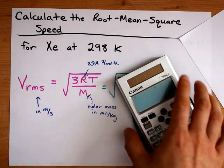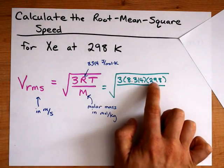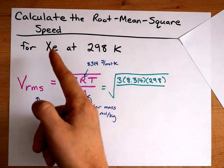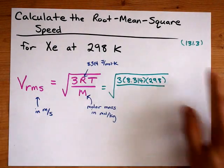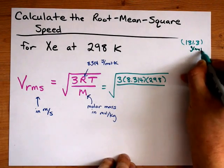Now, I've actually tried this video a couple times, and I've already plugged in the three, the 8.314 and the 298, but I forgot what the atomic mass of xenon was, so I went and looked it up. It was 131.3 grams per mole.